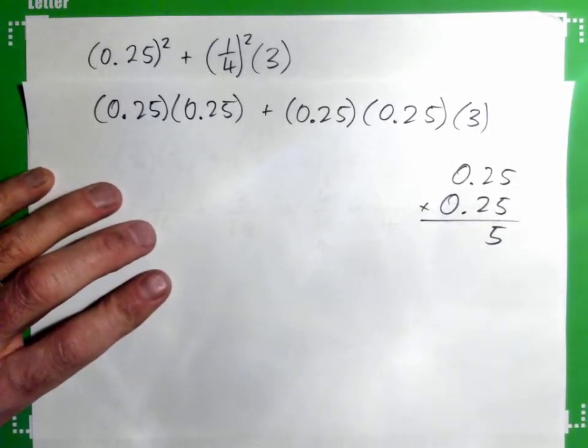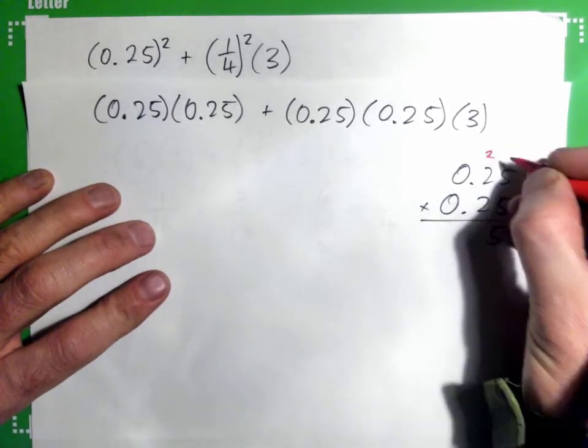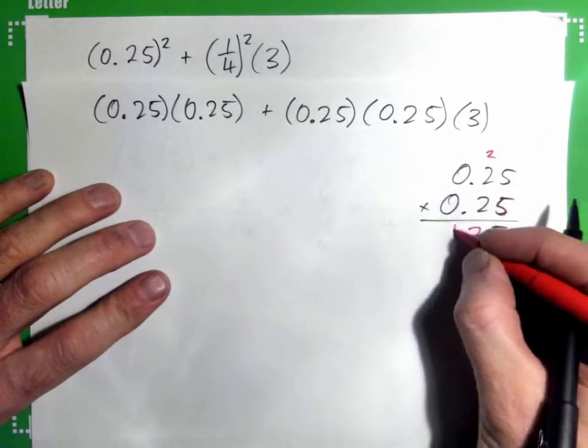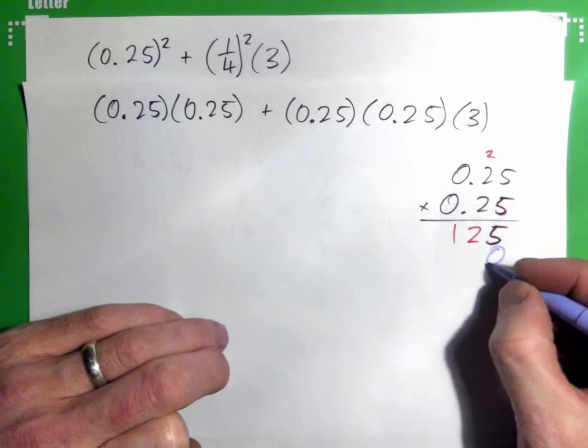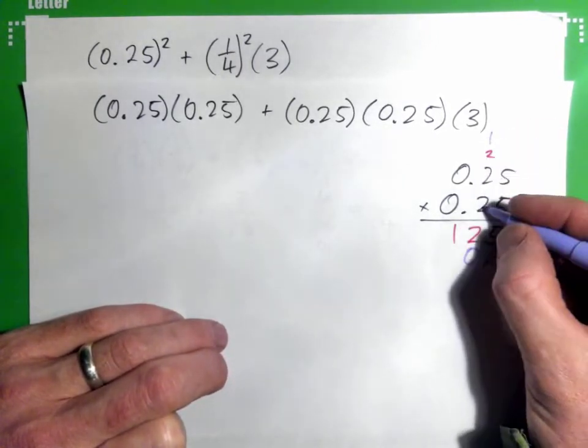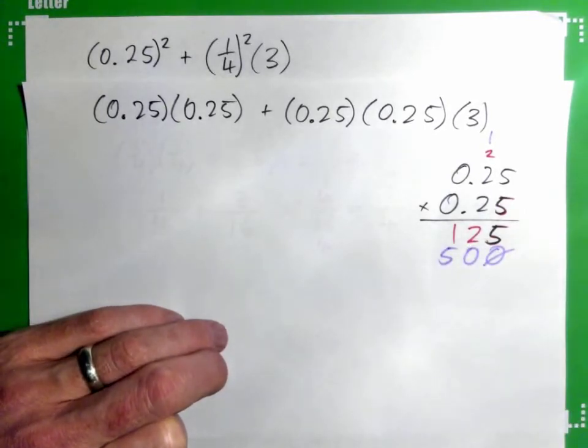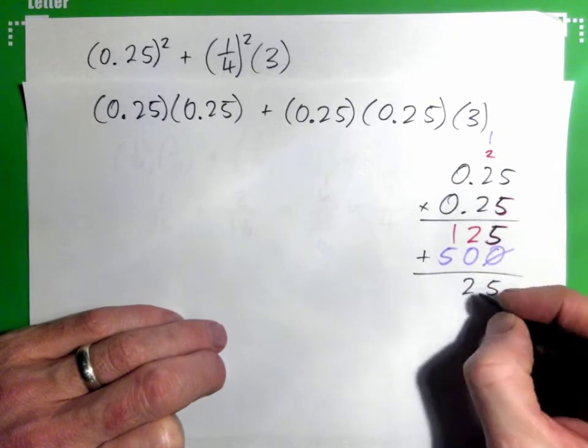5 times 5, let's see, 5 times 5 is 25, carry 2. 5 times 2 is 10 and 2 is 12. And then put down a placeholder 0. 2 times 5 is 10, carry 1. 2 times 2 is 4 and 1 is 5.